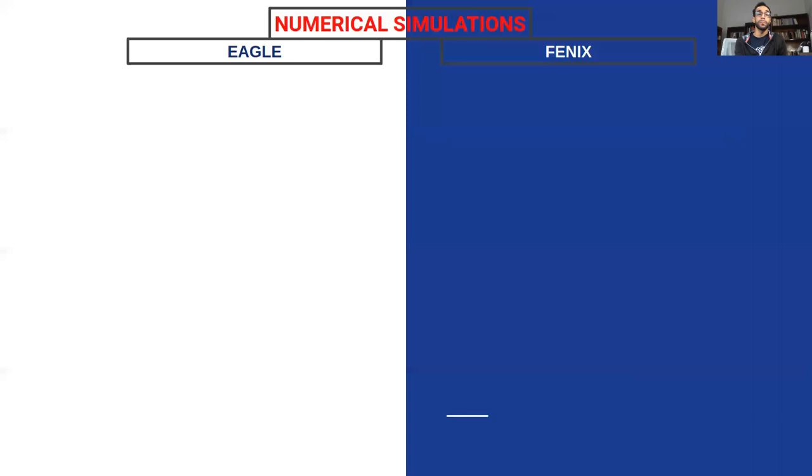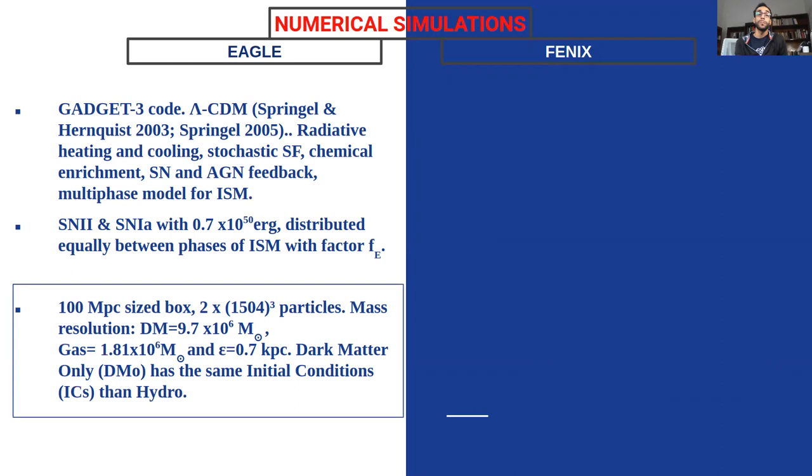So for this study, we analyzed two simulations performed with different versions of gadget code. First, the Eagle simulation with their main features. We use the Eagle sim of 100 megaparsec inside the box with similar mass resolution as the Phoenix suite, but with much better statistics.